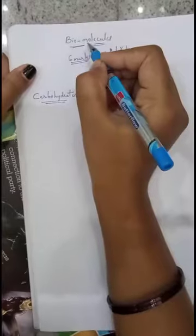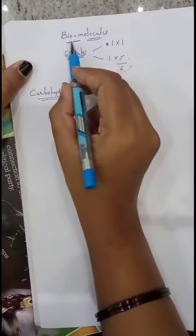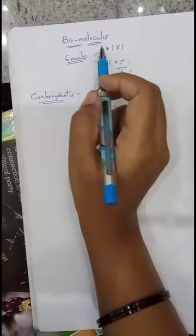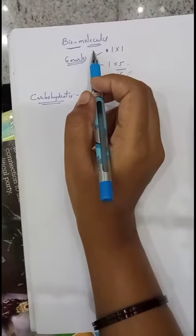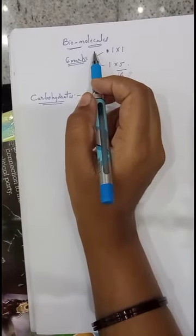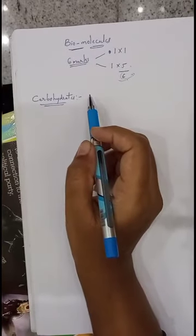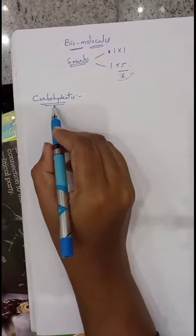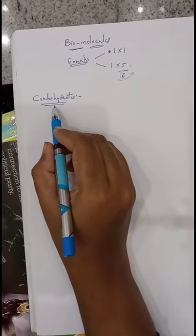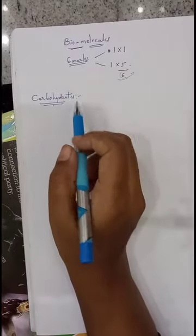First you want to know what are the important concepts for exam orientation. First you want to know the definition of biomolecules. Biomolecules are said to be the complex organic molecules which are present in a living system. Those are said to be biomolecules. Examples: carbohydrates, proteins, vitamins, nucleic acids, etc. All these are examples of biomolecules.